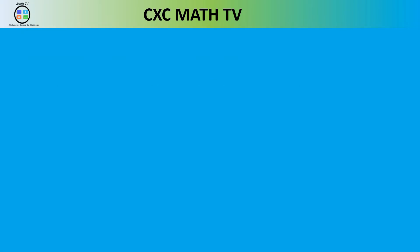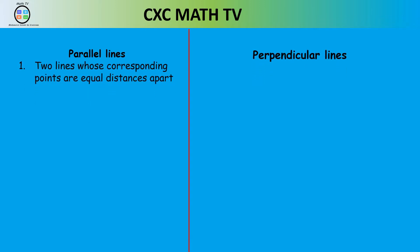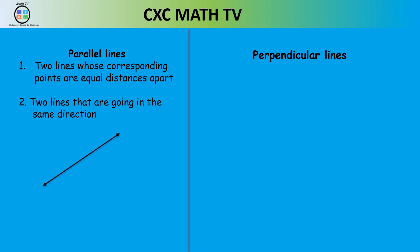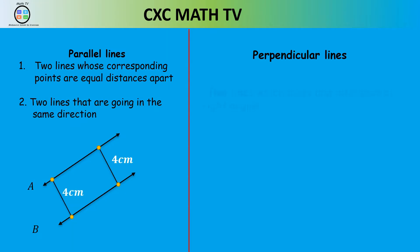There are two types of lines we want to look at: parallel lines and perpendicular lines. Parallel lines are two lines whose corresponding points are always equidistant apart — two lines always going in the same direction. Here's line A and line B. If you look at a point on line A and the point directly beneath it on line B, it's always equally distant apart — in this case, four centimeters apart.